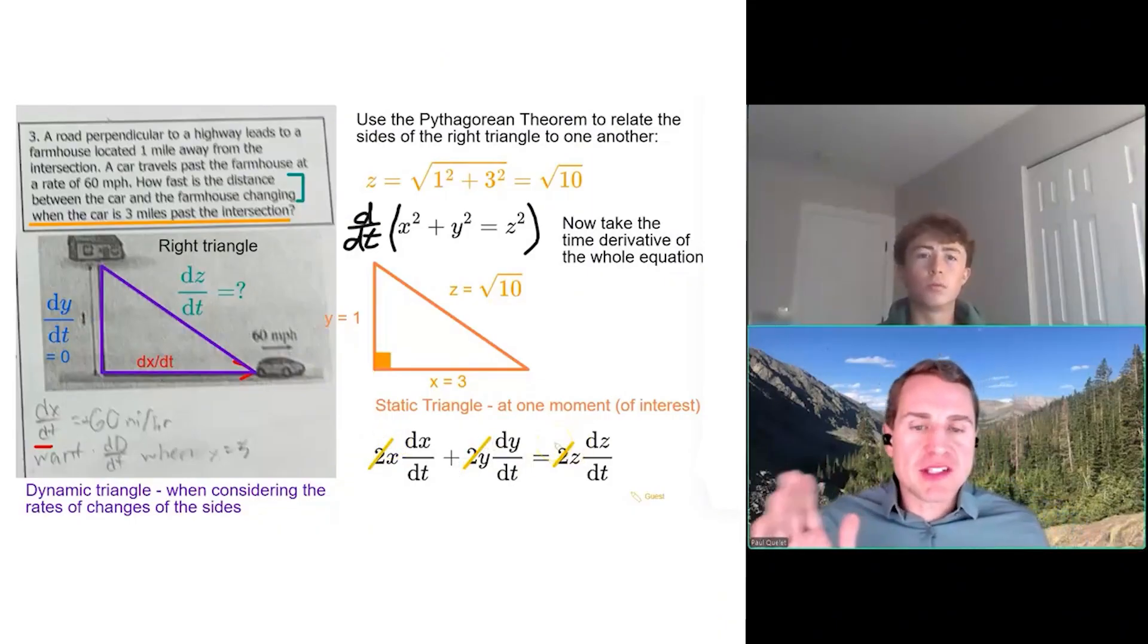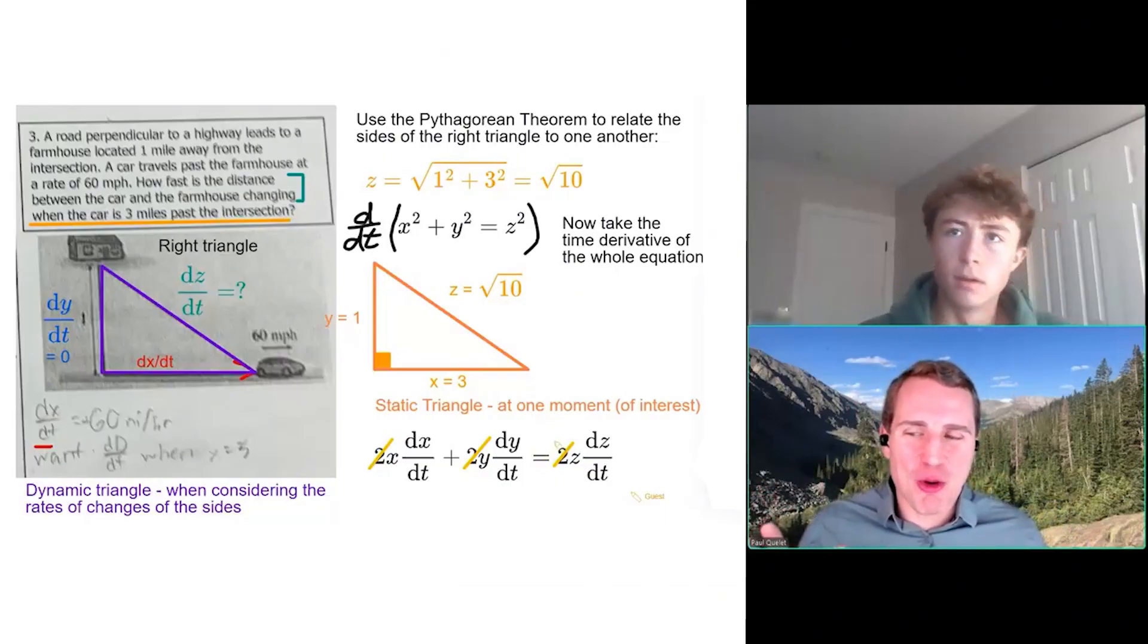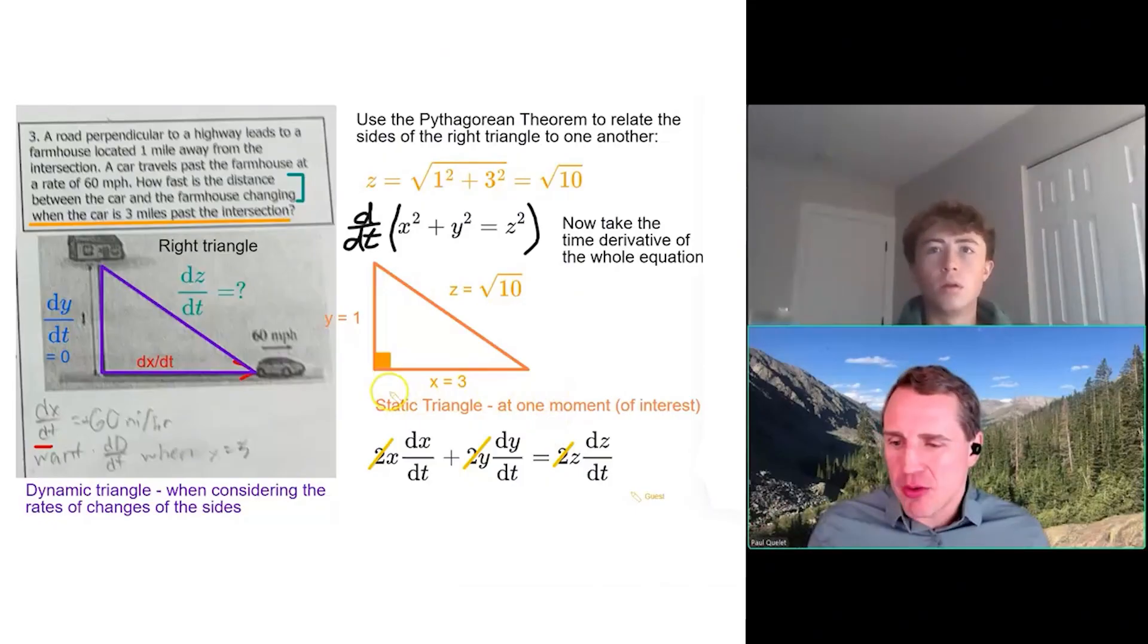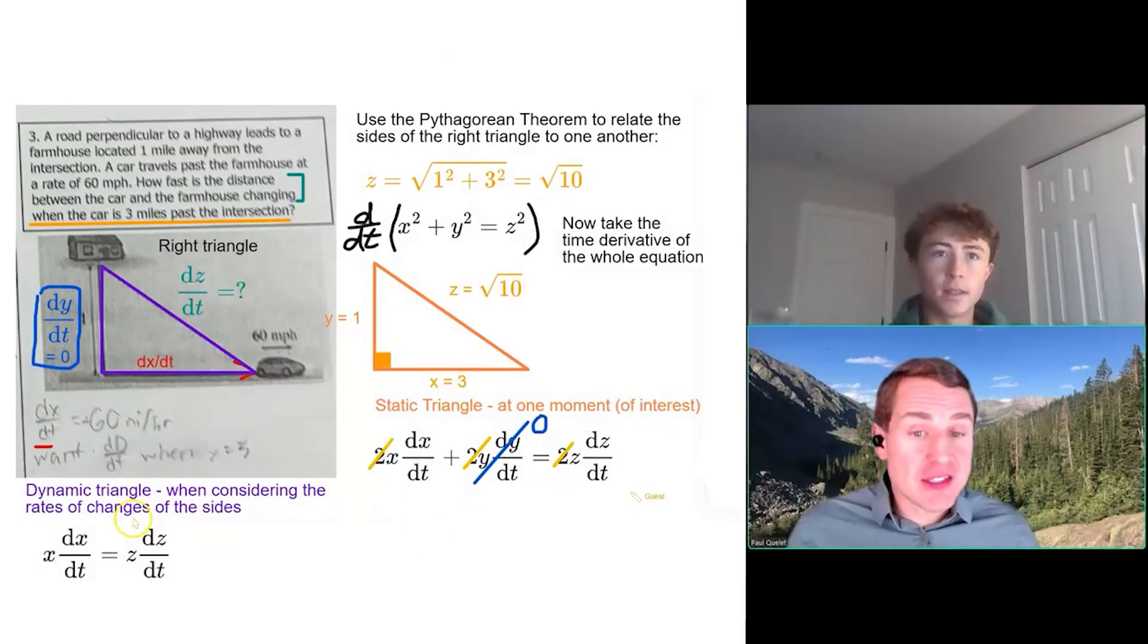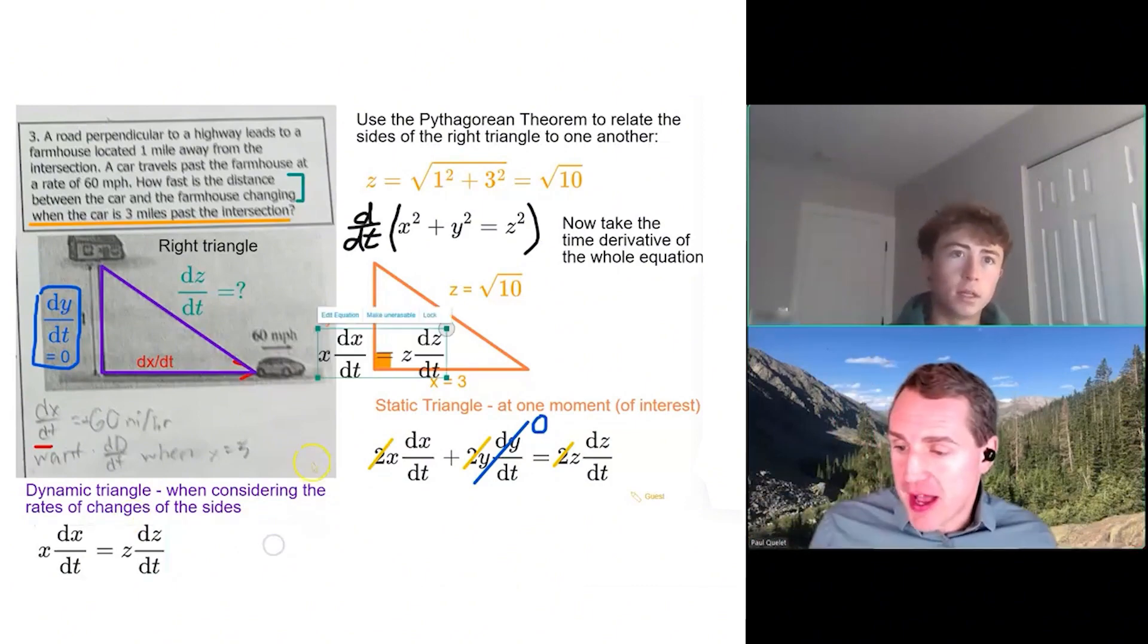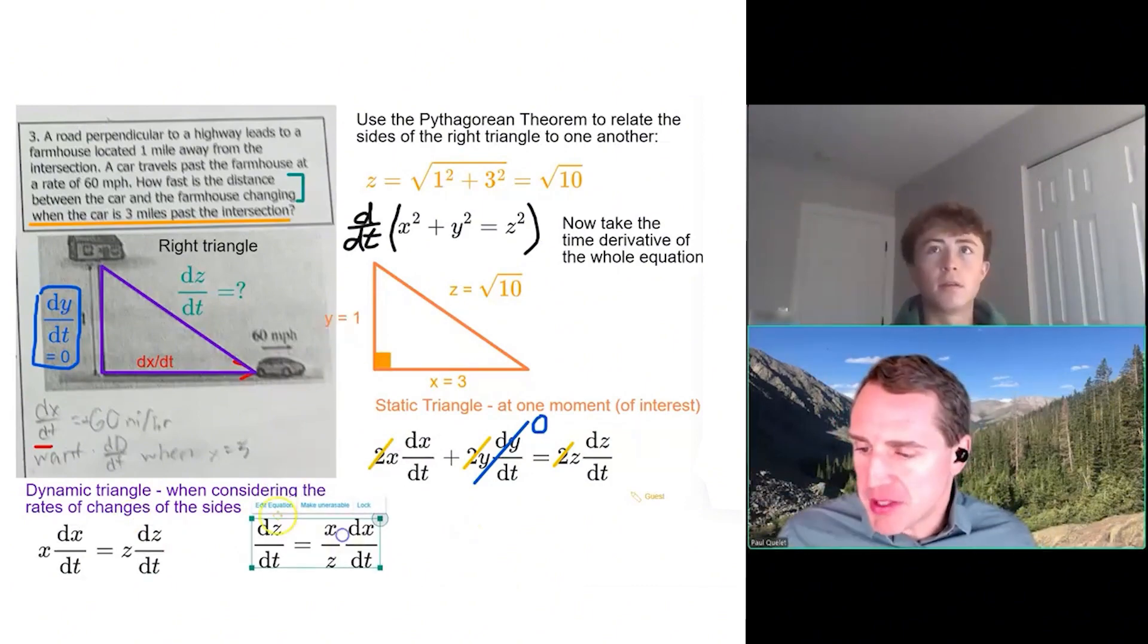When we go to simplify an equation, I always recommend if a particular value is zero, you can knock that term out. This entire term is going to drop out to zero. So let's simplify this. So that's not too bad. Now we're almost home. So just divide both sides by z. And then should we just put the numbers in?